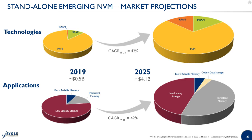The market projections for emerging NVM in standalone form show that in 2019 the market is still limited, dominated by low-latency drives based on 3D XPoint phase change memory and the first sales of non-volatile DIMMs. We expect this market to grow with a CAGR of approximately 40 percent, mainly driven by standalone PCM. The key application will be persistent memory, which will drive market growth over the next five years. We also anticipate increasing sales for other technologies, both MRAM and ReRAM, as players boost sales through different application types.